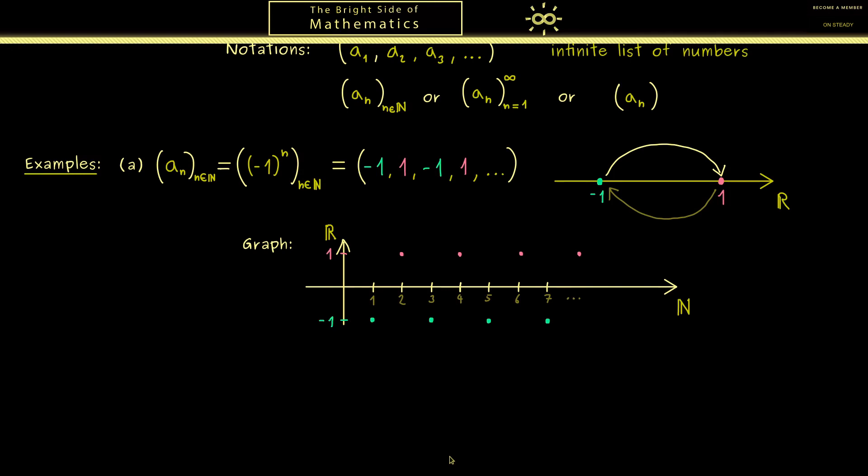For this example, you see not so much will happen because you still jump between -1 and 1. It doesn't matter how large n is, the jumping is always the same. For this reason, let's look at another example. Here our sequence should be defined by the rule 1/n. This is way more interesting because we get out different numbers. The first number is just 1, but then we have 1/2, then 1/3, and then a lot of different fractions because the denominator gets larger and larger.